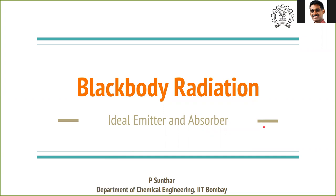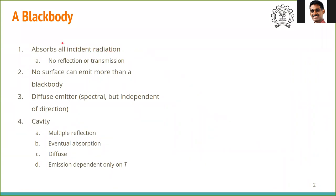In this lecture, we'll see an important concept of radiation called blackbody radiation, which defines what an ideal emitter and absorber is. A blackbody is defined as a body that absorbs all incident radiation, meaning there is no reflection or transmission. Another property is that no surface can emit more than the blackbody, so blackbody emission is also the maximum. It both absorbs everything that hits it and emits the maximum.